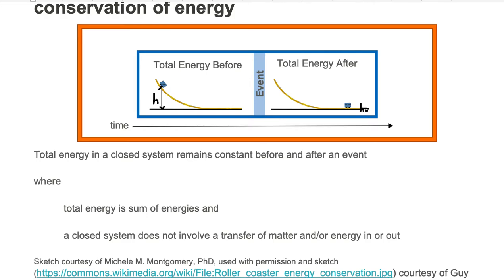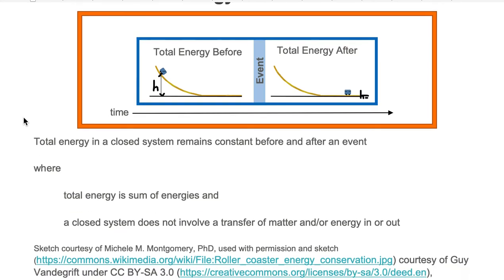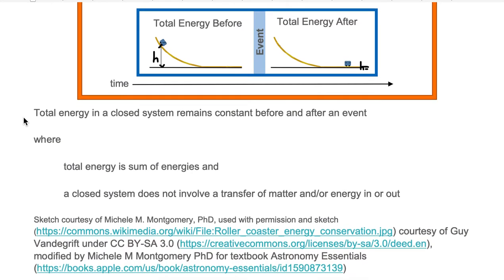Conservation of energy states that the total energy in a closed system remains constant before and after an event. The total energy is the sum of energies in a closed system. A closed system does not involve a transfer of matter and or energy in or out. Let's break down this definition of conservation of energy.